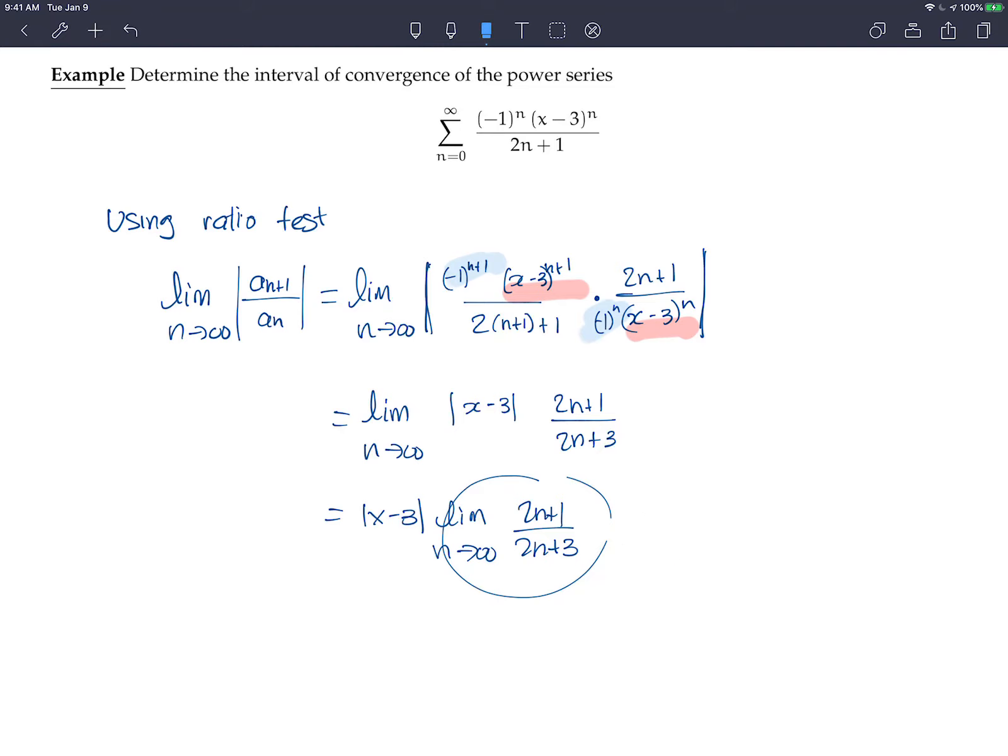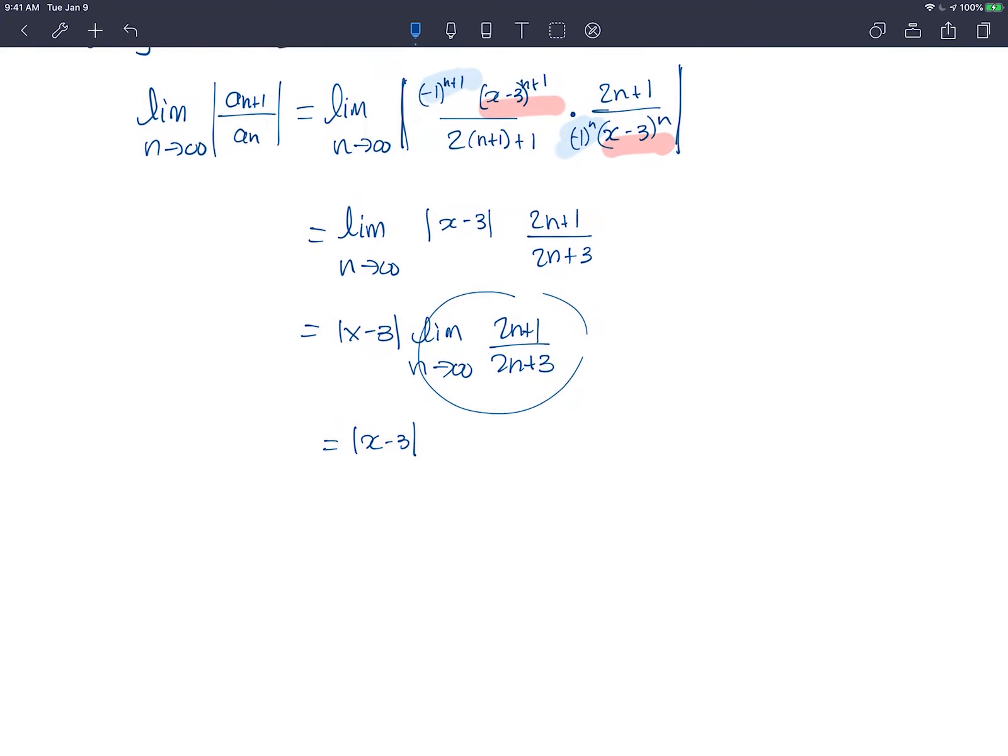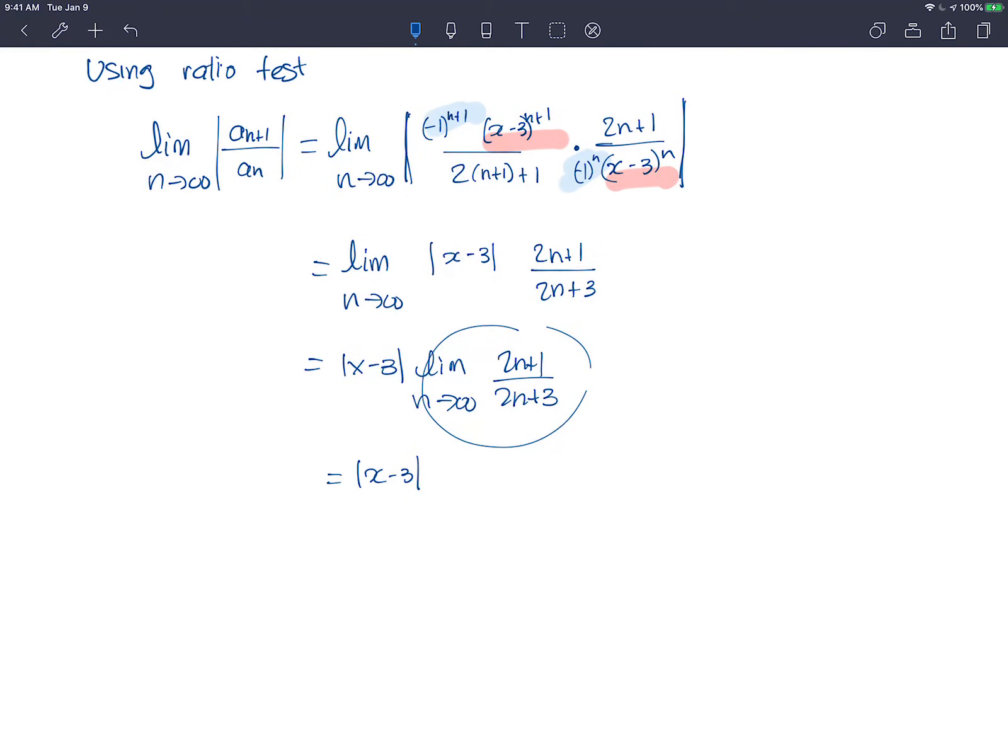Okay, so if we got that, this means that the limit is the absolute value of x minus 3. And the ratio test tells us that this will converge. This means that the series will converge if x minus 3 in absolute value is less than 1.